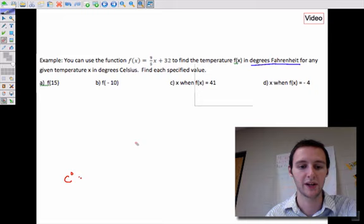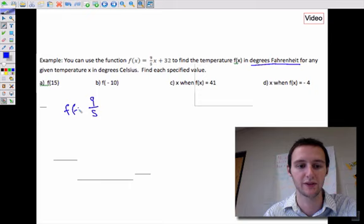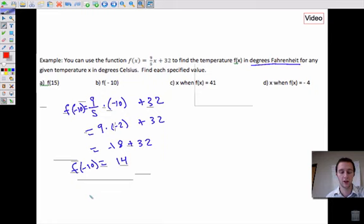The next one asks for f(-10). In other words, what is the temperature in degrees Fahrenheit when the temperature outside is -10 Celsius? So a similar type of setup for this, f(-10) equals 9 over 5 times -10 plus 32. This just gives us 9 times -2 plus 32, which equals -18 plus 32, which equals 14. So when it is -10 degrees Celsius, that is the same as 14 degrees Fahrenheit.